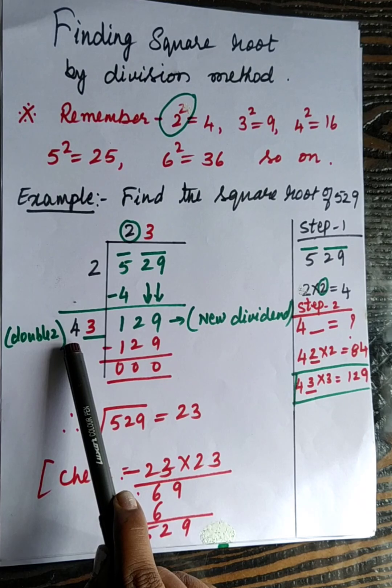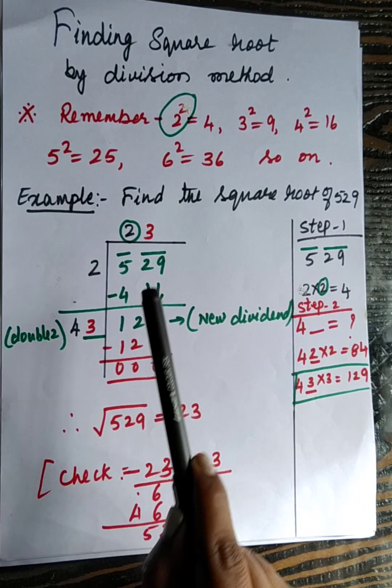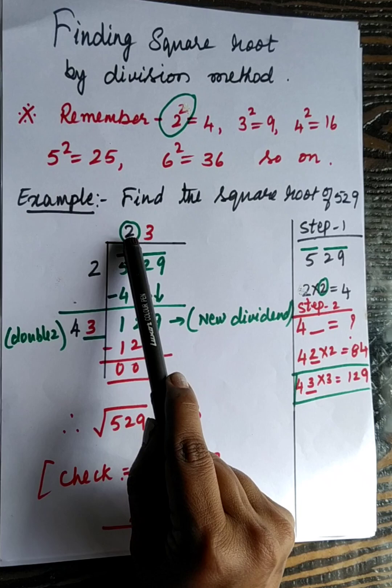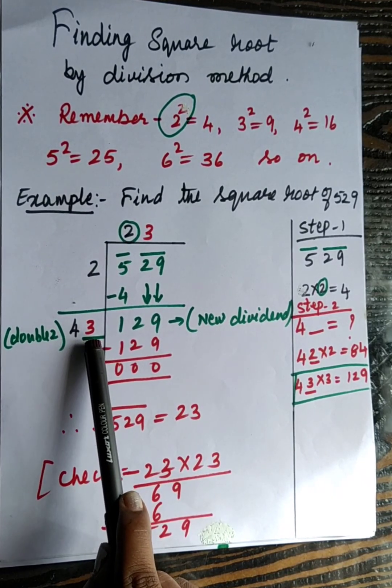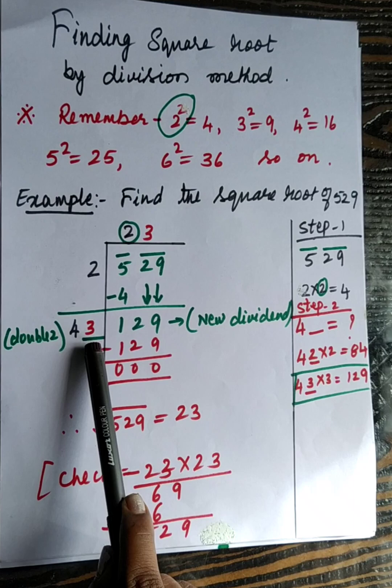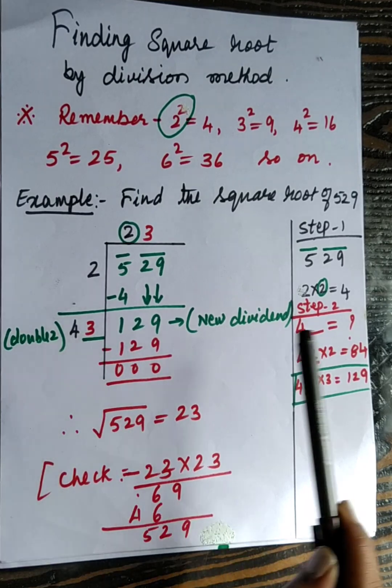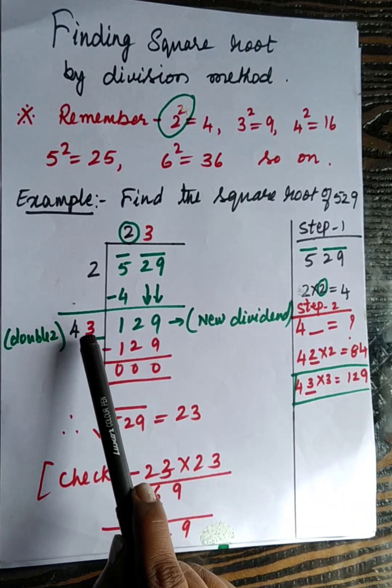When finding square root, whatever quotient you get, you have to make the double of that, and this is 4. You should leave one blank space and you should go on trying for the number what has to come here.